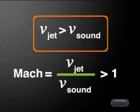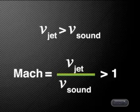When this shock wave reaches somebody standing on the ground, it causes a very loud sound called a sonic boom. When a jet flies faster than the speed of sound, its speed is described as being supersonic. Because the jet's velocity is greater than the speed of sound, its Mach number would then be greater than one.